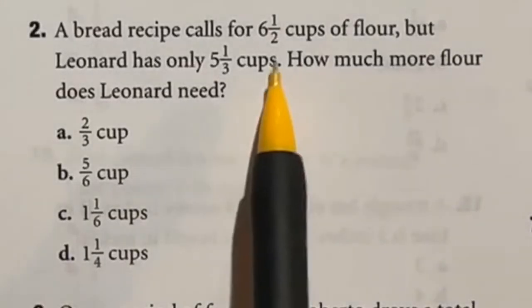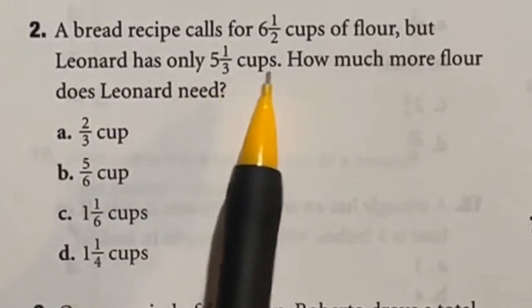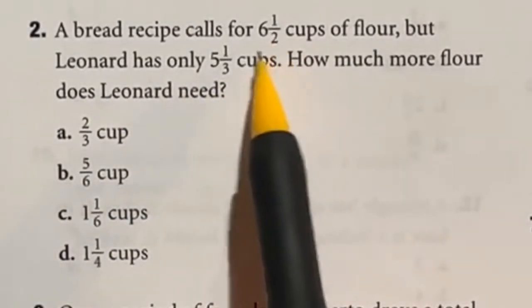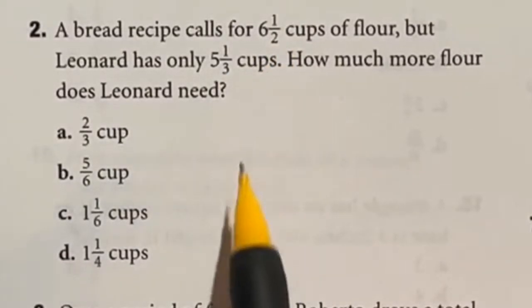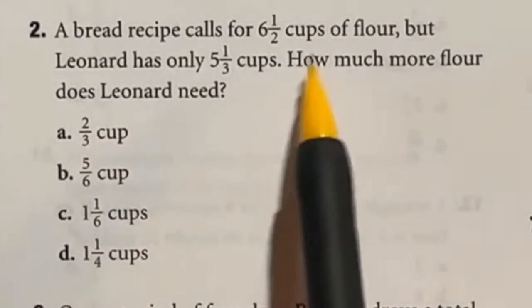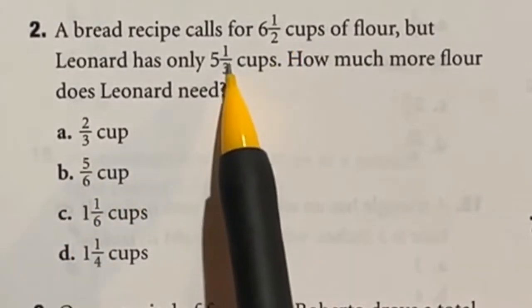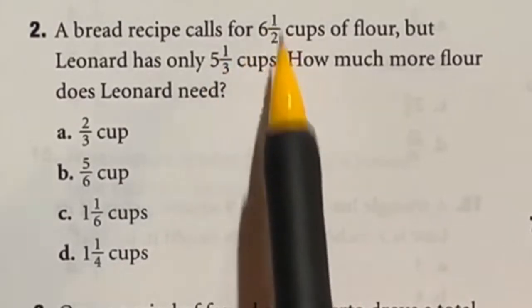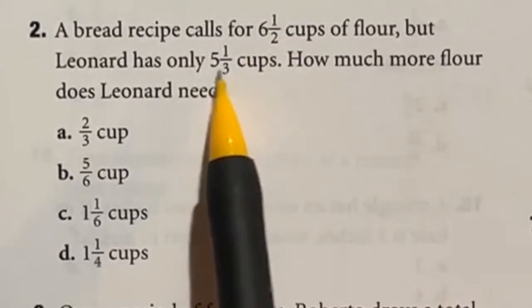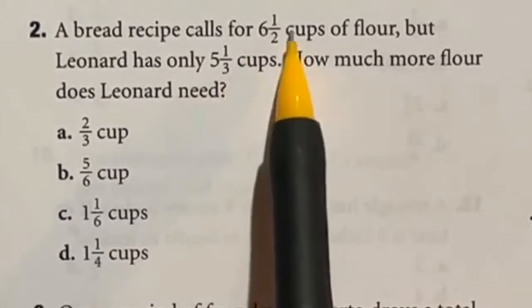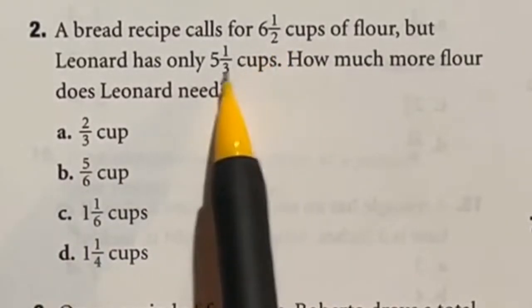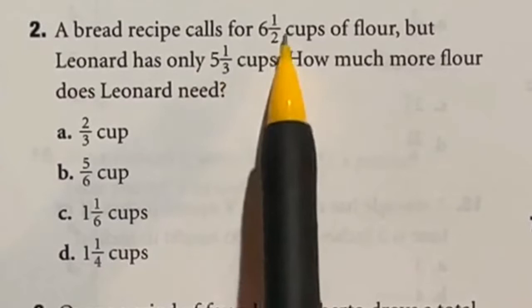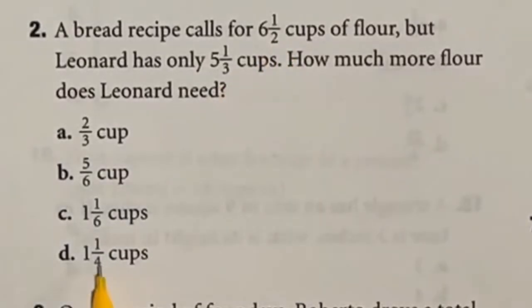So a recipe calls for 6 and a half cups of flour, but Lennart only has 5 and a third cups. So how much more does he need? Essentially, we're just subtracting the two of these here. Without actually doing all of the math behind it, we can pretty much estimate an answer off of what we're given. First off, one half is bigger than one third, so we won't be carrying anything over from the whole place. So in this case, 6 and a half minus 5 and a third must have at least one in the answer. So that leaves us with C or D. In that case, I know that to subtract fractions, I need to find a common denominator, and in this case that would be 6. Now 4 is not going to work for that at all, so that leaves us with an answer of C.